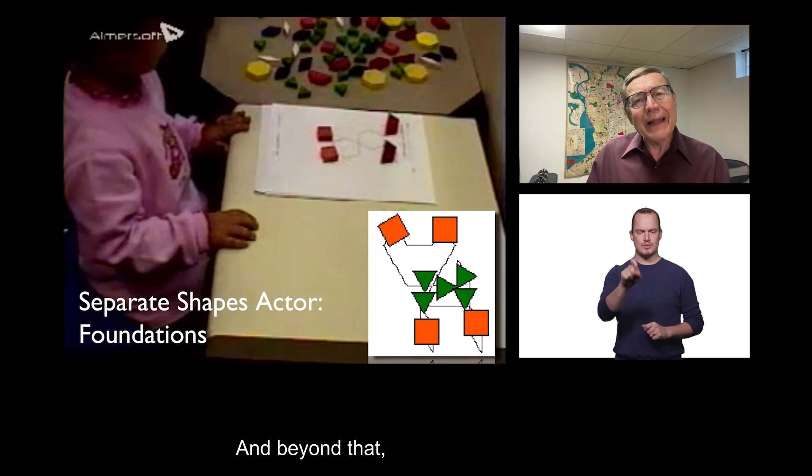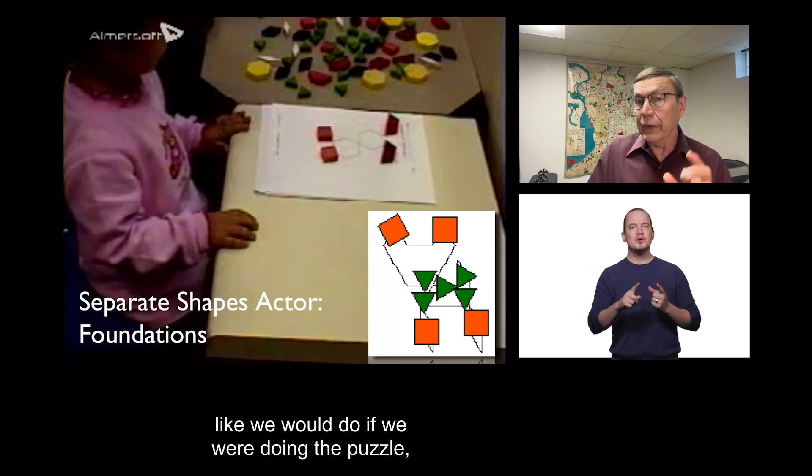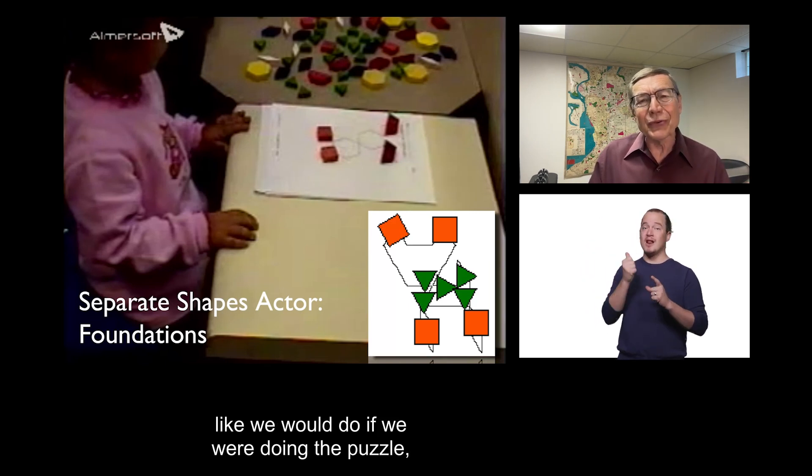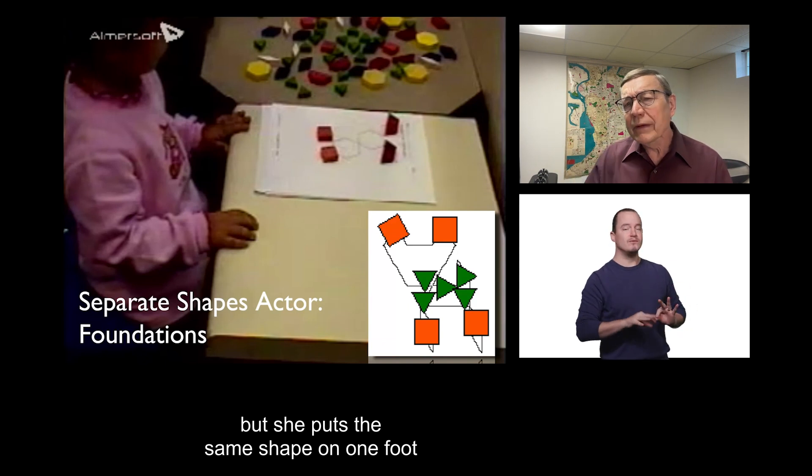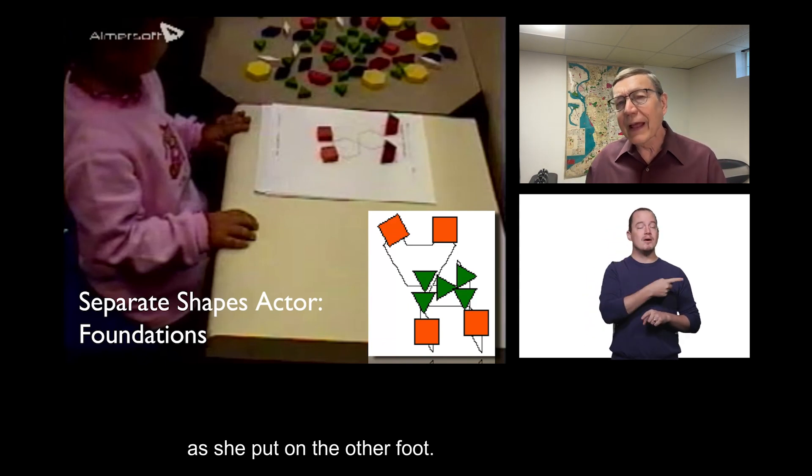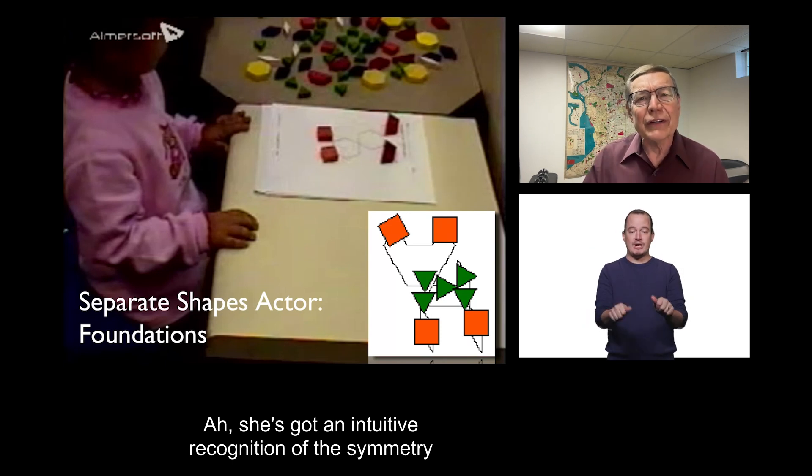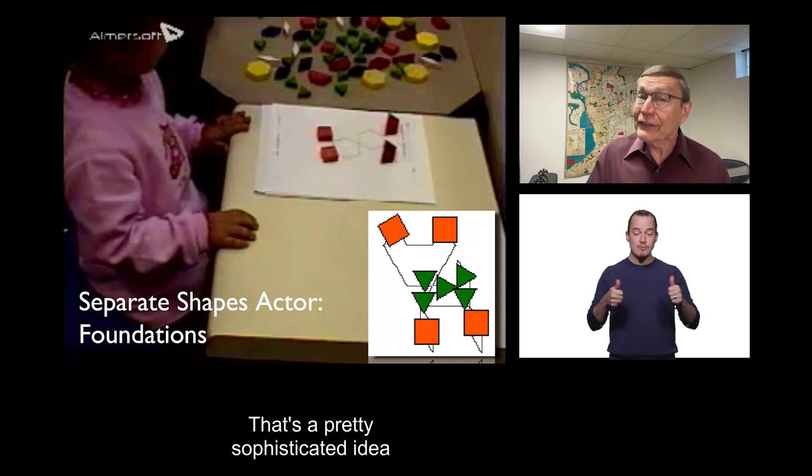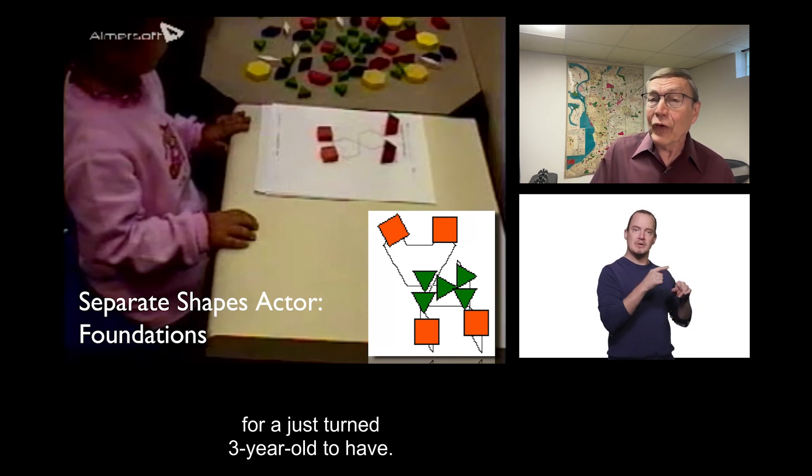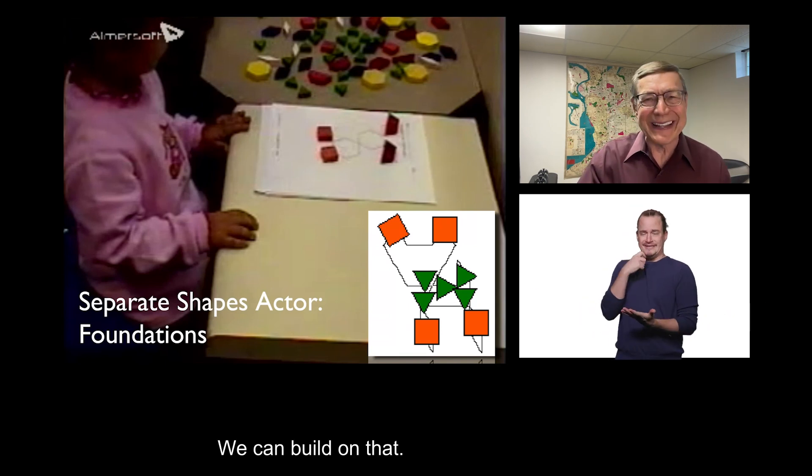But, think about it. What can we build on? Well, she knows she's supposed to put down the shapes. She's supposed to fill the puzzle. Well, and beyond that, even though she's not matching the shapes accurately like we would do if we were doing the puzzle, but she puts the same shape on one foot as she put on the other foot. Ah, she's got an intuitive recognition of the symmetry of that puzzle and is using that. That's a pretty sophisticated idea for a just-turned-three-year-old to have. We can build on that.